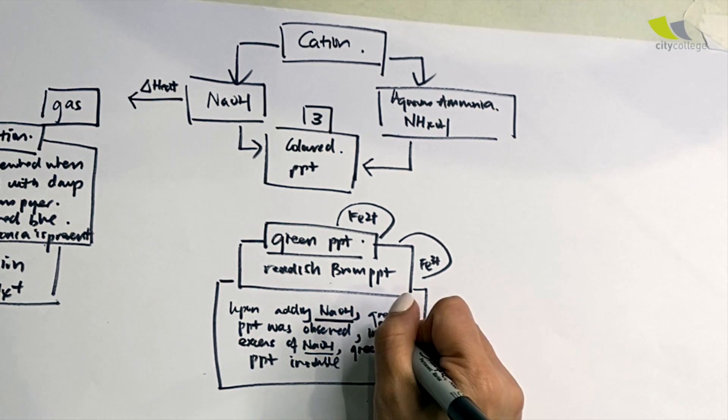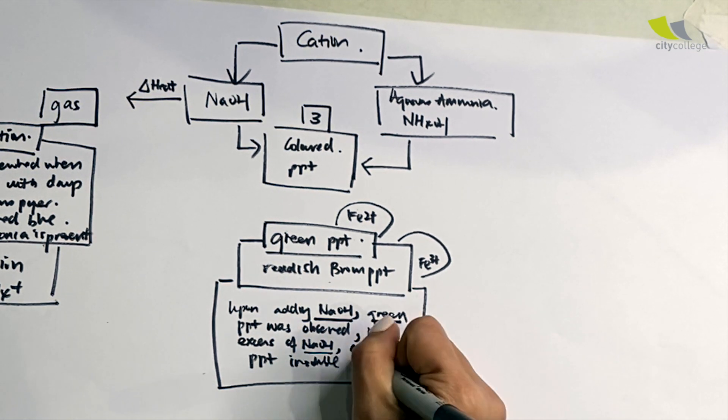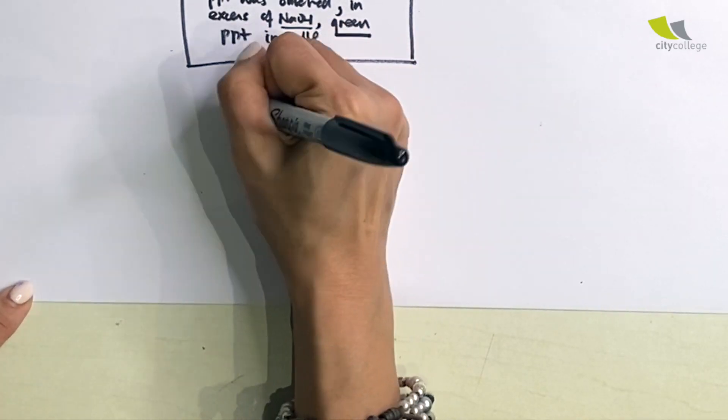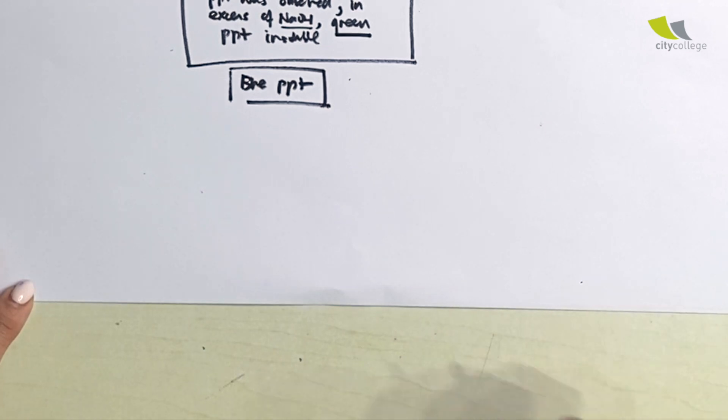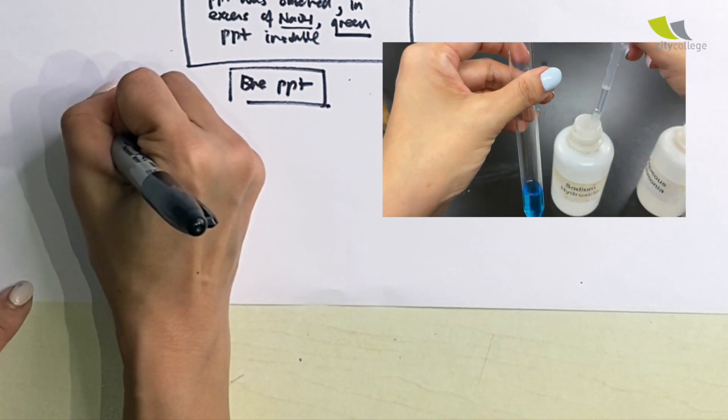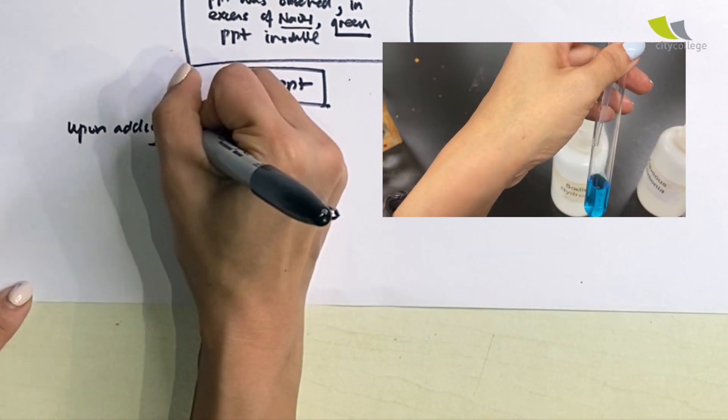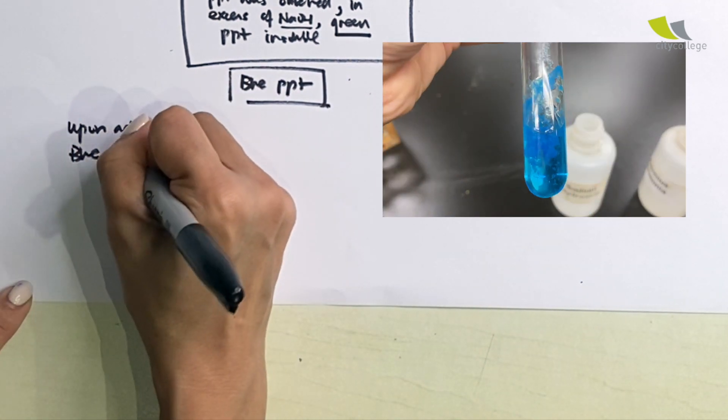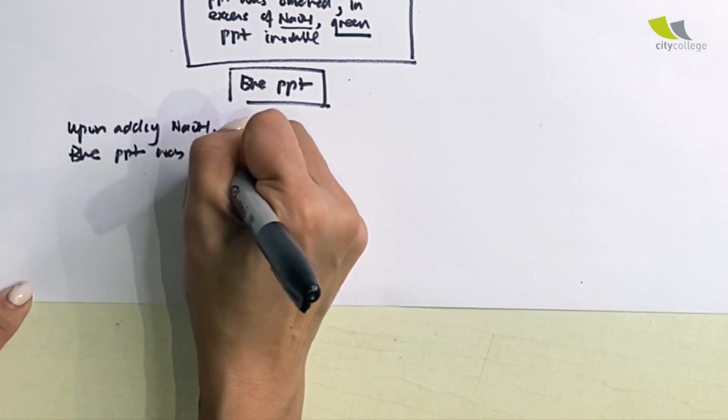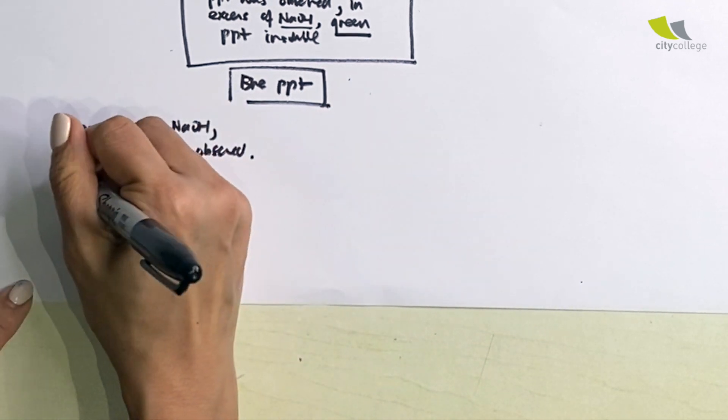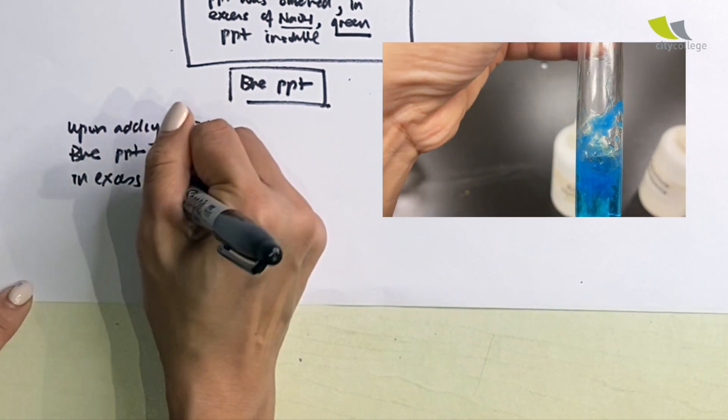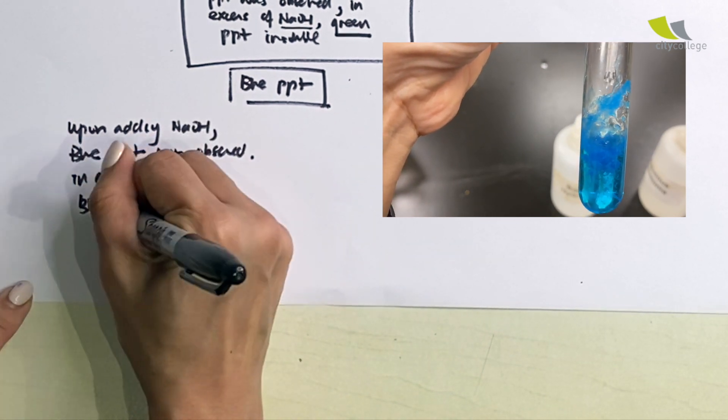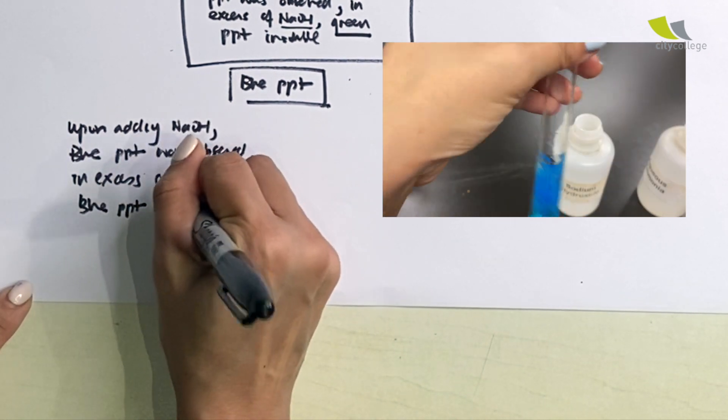Last but not least, we have the blue precipitate, and who actually gives you the blue precipitate? Upon adding NaOH, blue precipitate was observed, and in excess of NaOH, blue precipitate insoluble.